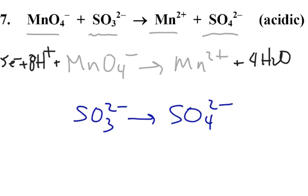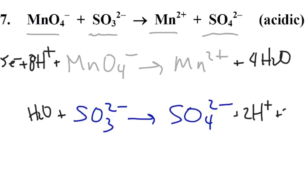For the second equation, we start with our sulfurs. We have one sulfur, one sulfur. Next step we'll do our oxygens. We have four oxygens on the left and three on the right, so we're going to add one water molecule - that'll give us another oxygen. Third step is our hydrogens: we have two hydrogens on the left, so we're going to add two hydrogens on the right. Next thing is the charge. The left side is negative two, the right side is neutral, so the right side is more positive by two, so we're going to add two electrons.